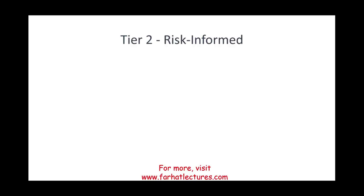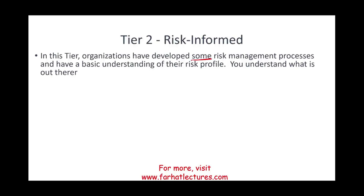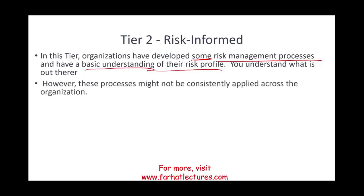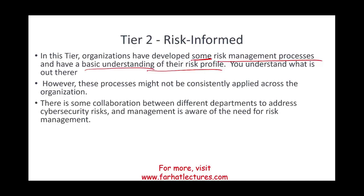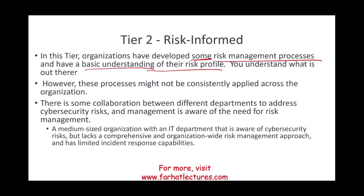Tier two is Risk Informed. Organizations at this level have developed some risk management processes and a basic understanding of their risk profile — better than tier one, but processes may not be consistently applied across the organization. There is some collaboration between departments, and management is aware of the need for risk management. Typically a mid-sized company with an IT department that's aware of cybersecurity risks but lacks a comprehensive, organization-wide approach and has limited incident response capability.